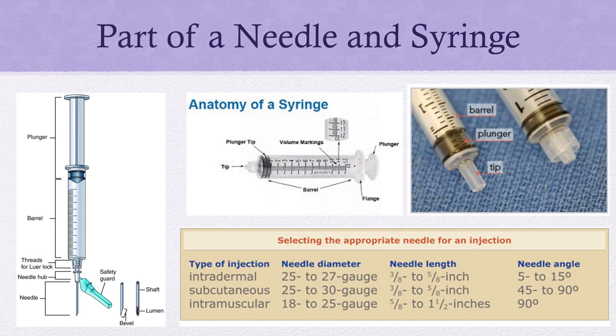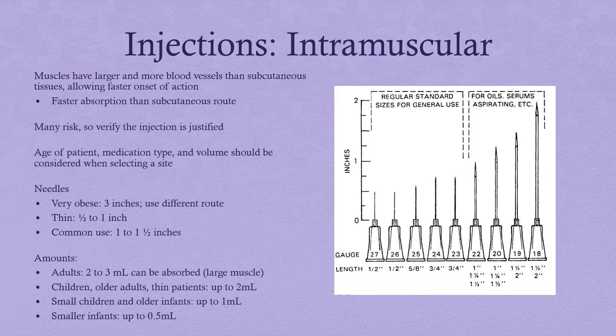The different gauges of needles refer to how big the needle is, and it's important to note that the larger the gauge number, the smaller the needle. A 27-gauge needle is very small and thin — one you'd use for an intradermal injection — while an 18-gauge needle is a much larger needle used for intramuscular injections or drawing blood, and will cause more pain. Make sure you understand: a big gauge number means a smaller sized needle.